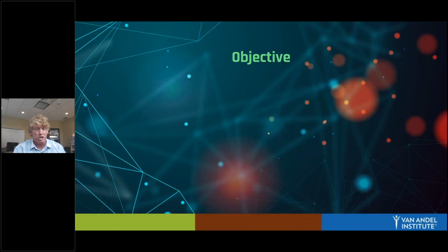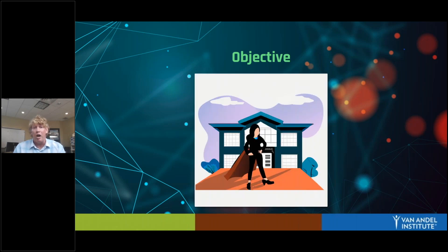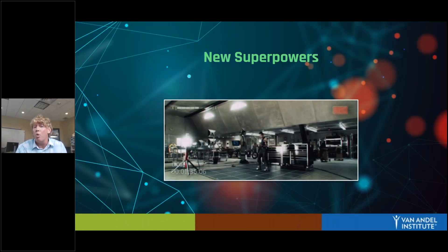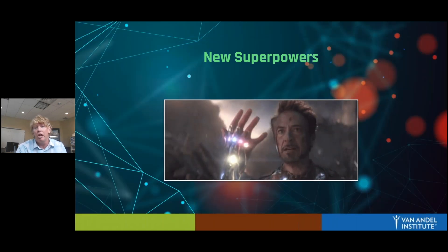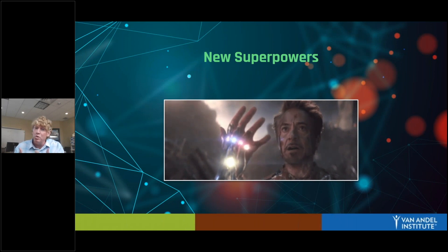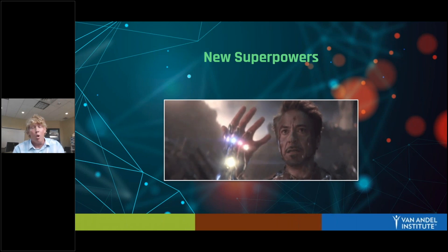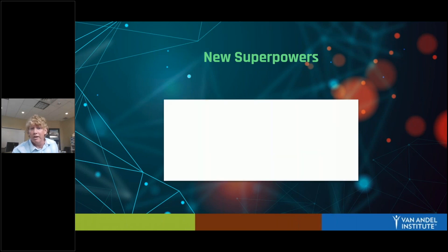We are going to get started with an objective. My objective today is to help you realize what sort of superpowers you now have at your fingertips. That's a great way to think about AI — it can superpower you as a teacher and your students as learners. Now, with any new superpowers, if you've watched any superhero movie, you'd know that sometimes things don't go quite the way they were hoping.